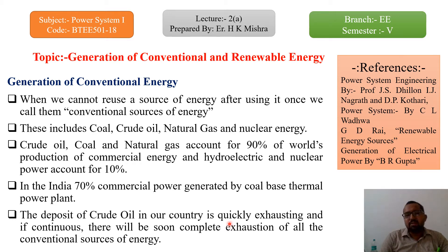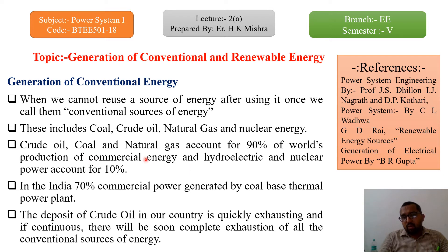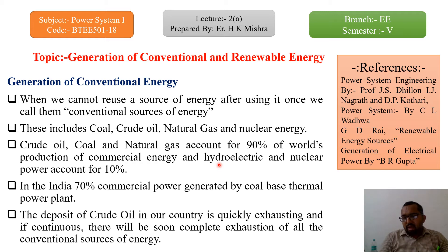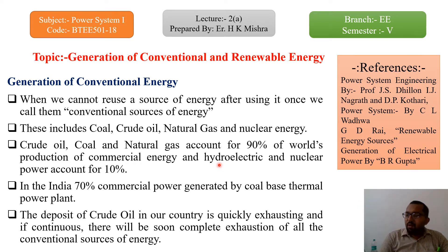Mostly ninety percent of conventional energy plants are based on either coal, oil, or natural gases. We know that conventional energy sources like coal, natural gases, and crude oil are limited and may be exhausted as we consume them day by day. In the future, after ten to fifteen years, they could be totally exhausted if we do not design alternatives. If the overall energy suddenly collapses, we have to move to renewable energy sources.